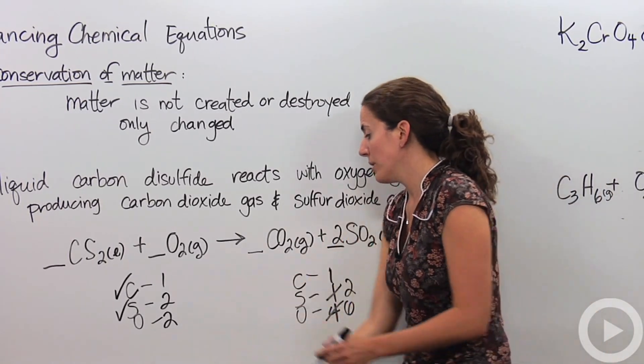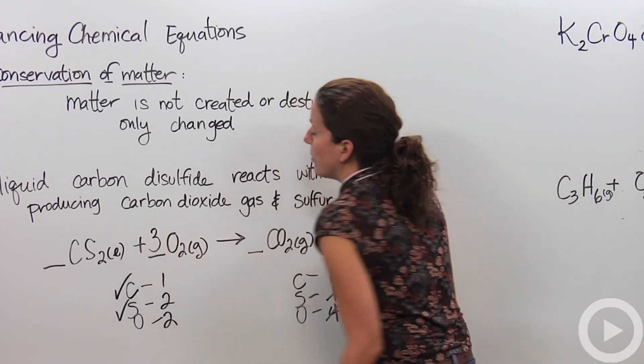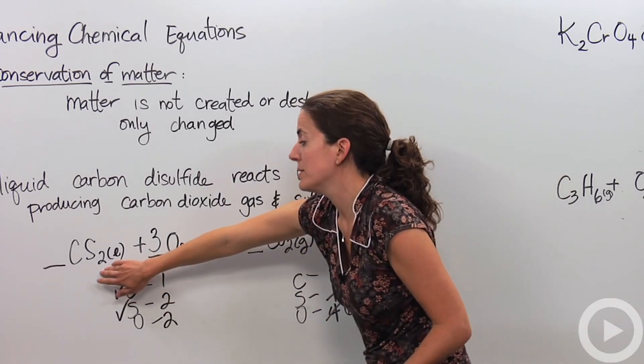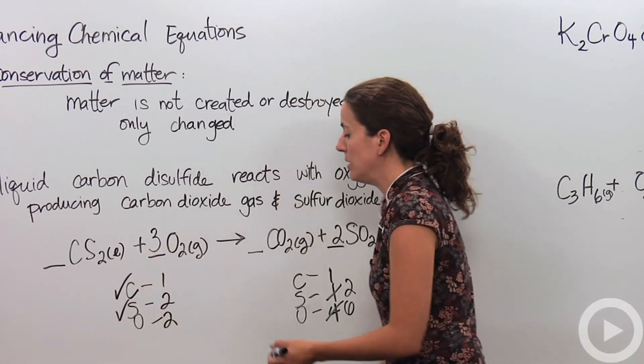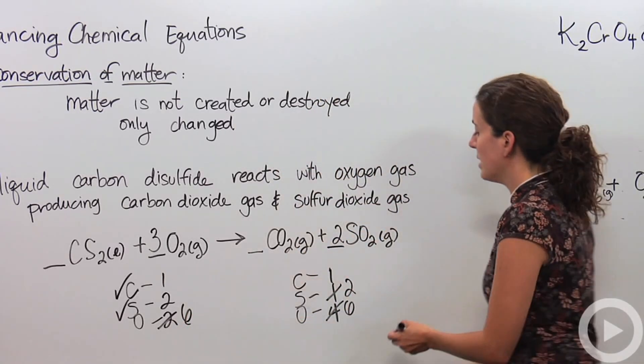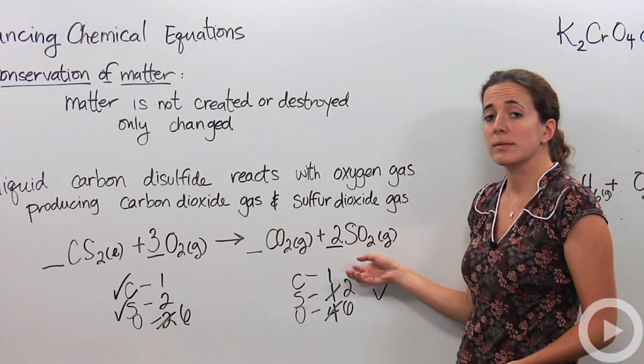So over here, we need three oxygen gas particles to react with one carbon disulfide particle. So we're going to change that to six, and now it's one, two, six, one, two, six. We are good to go. This is completely balanced. Great reaction.